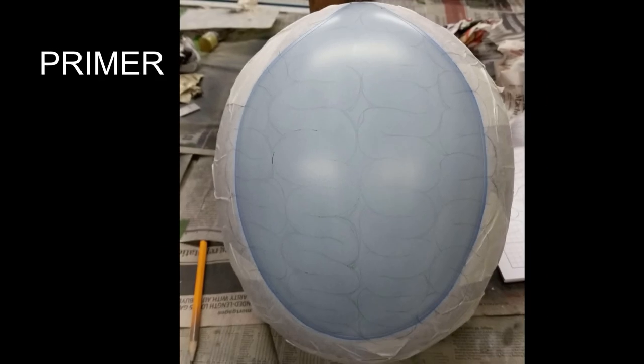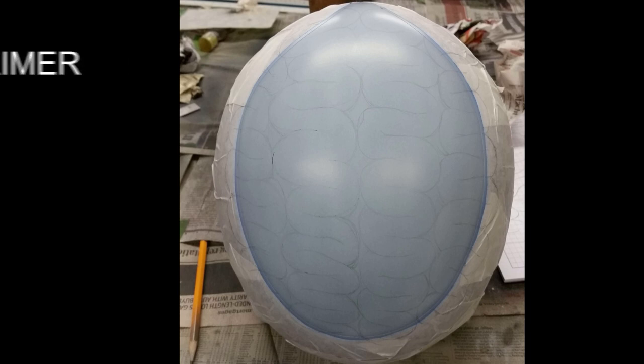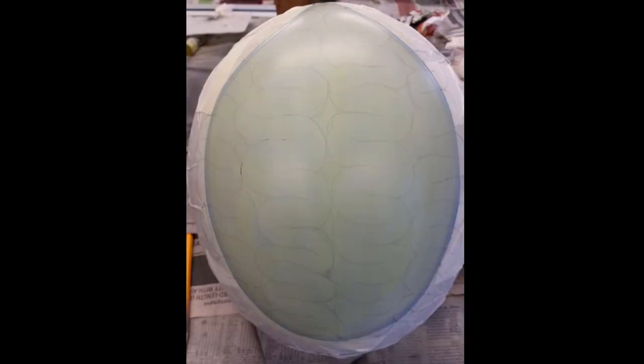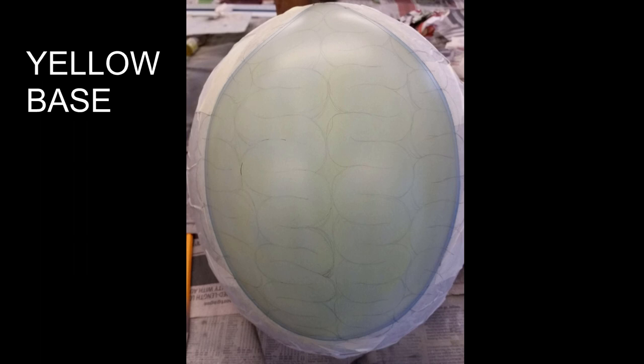All right. So I'm starting off with a black helmet. I masked out the areas that I didn't want to paint and then I sprayed a gray primer and sketched out my design.